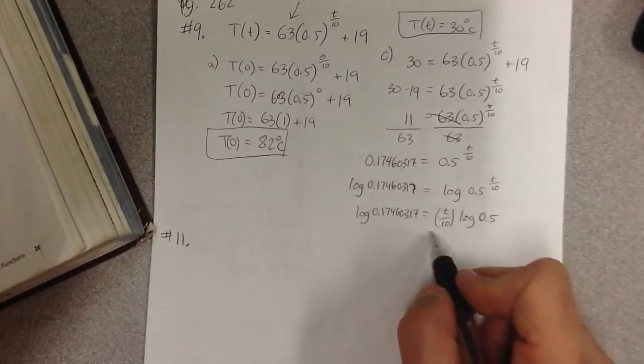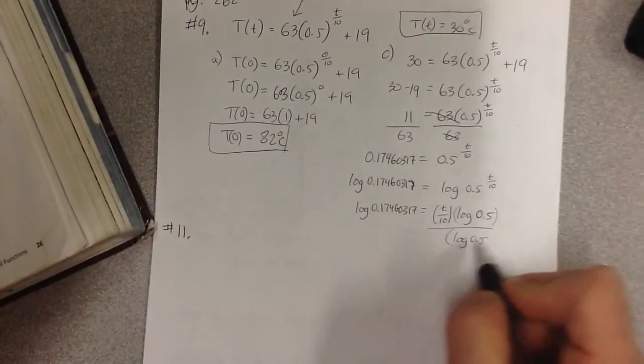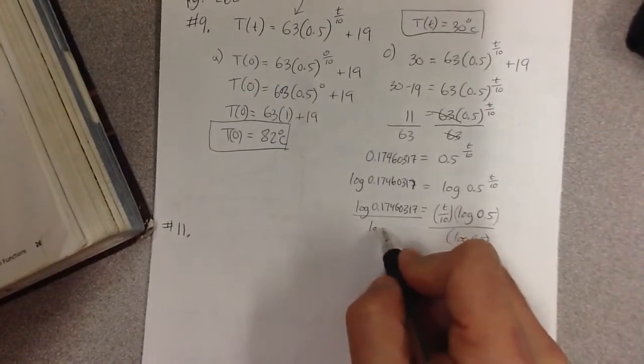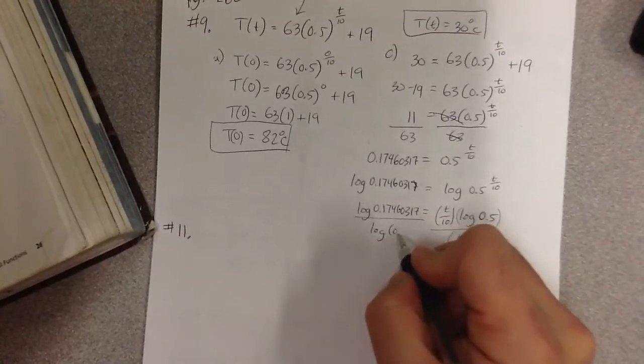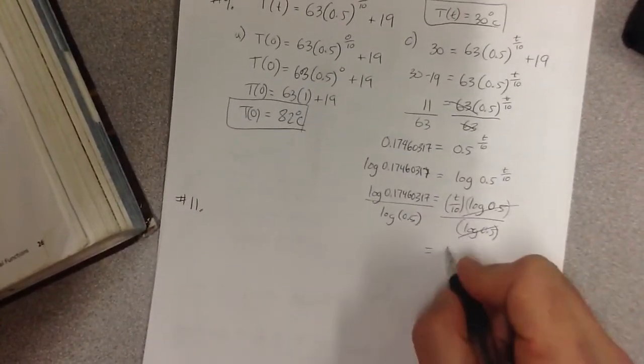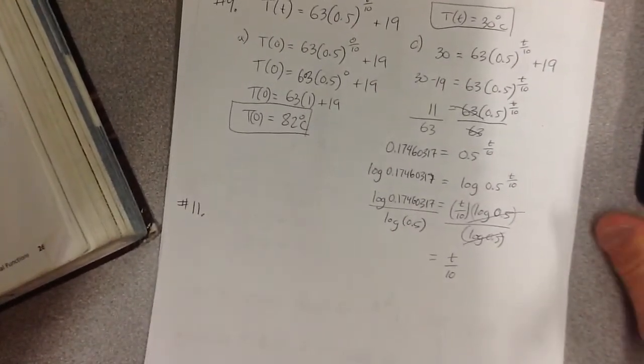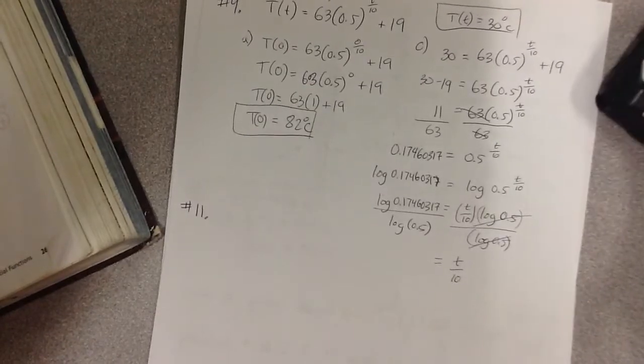Continuing this, in order to get rid of this, I'm going to divide both sides by the log of 0.5 to isolate for t. And so I will end up with t over 10 is equal to, and now I'm going to have to take out my calculator and do log of that divided by log of that.